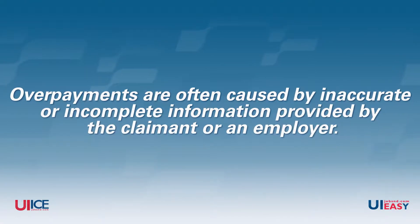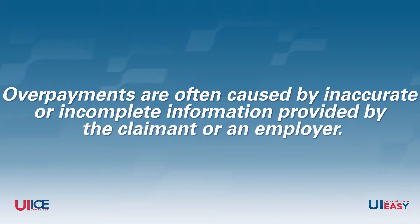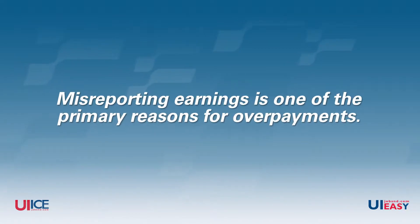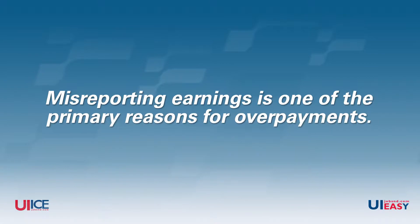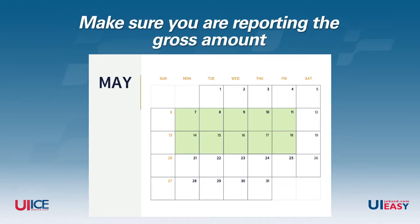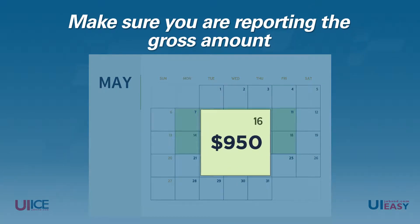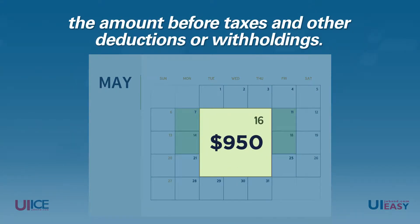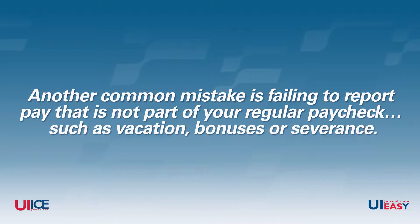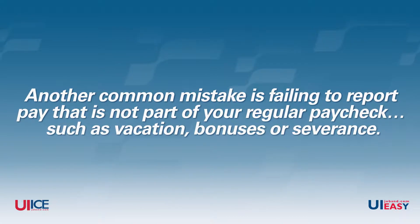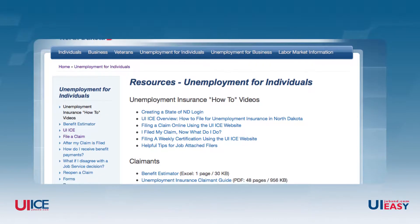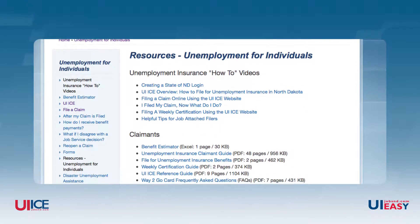Overpayments are often caused by inaccurate or incomplete information provided by the claimant or an employer. Misreporting earnings is one of the primary reasons for overpayments. Earnings need to be reported the week you did the work and not when you received your paycheck. Make sure you are reporting the gross amount, which means the amount before taxes and other deductions or withholdings. Another common mistake is failing to report pay that is not part of your regular paycheck, such as vacation, bonuses, or severance. Helpful videos and brochures regarding how to report your earnings can be found in the Resources area on JobsND.com.